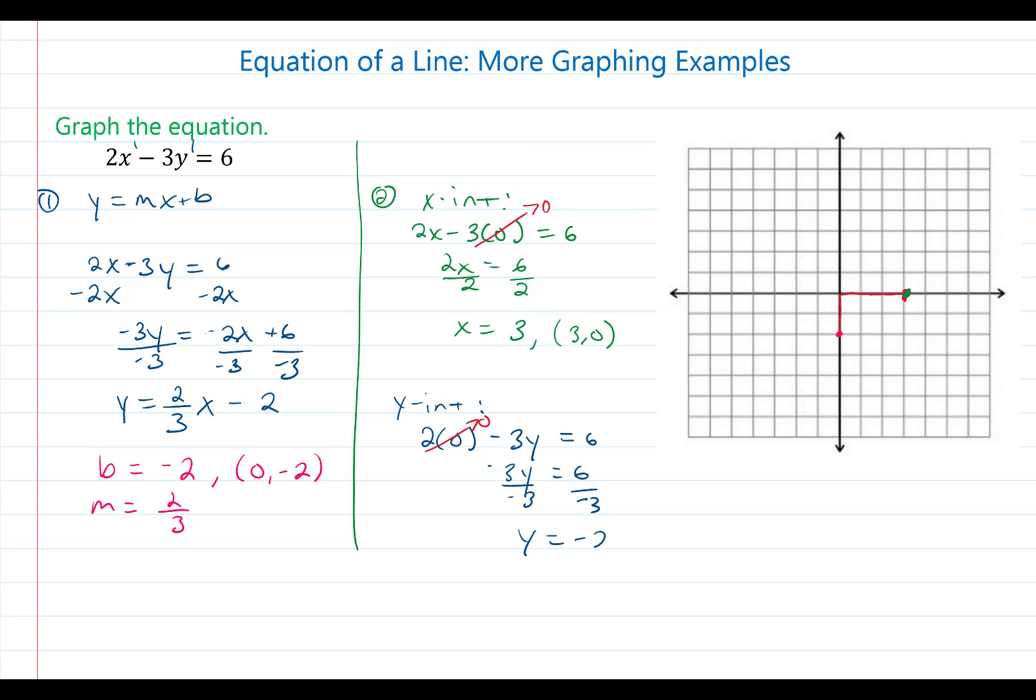We have y is equal to negative 2 which means our y intercept is (0, -2). Which confirms what we found earlier in our slope intercept form. And so we have a y intercept of negative 2, plot that point.